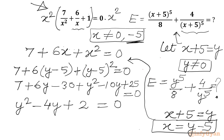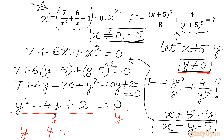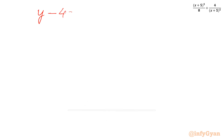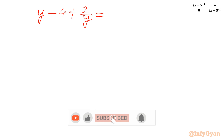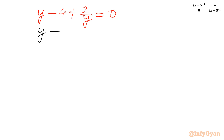Since y cannot be equal to 0, I can divide both sides by y. We get y − 4 + 2/y = 0. Adding 4 to both sides gives us y + 2/y = 4.